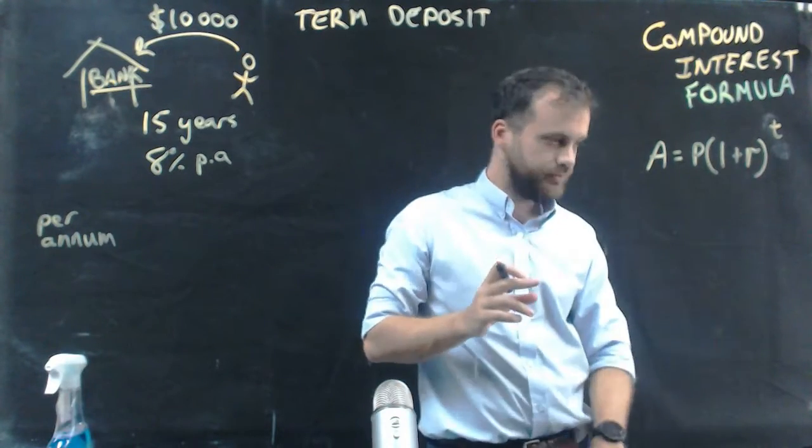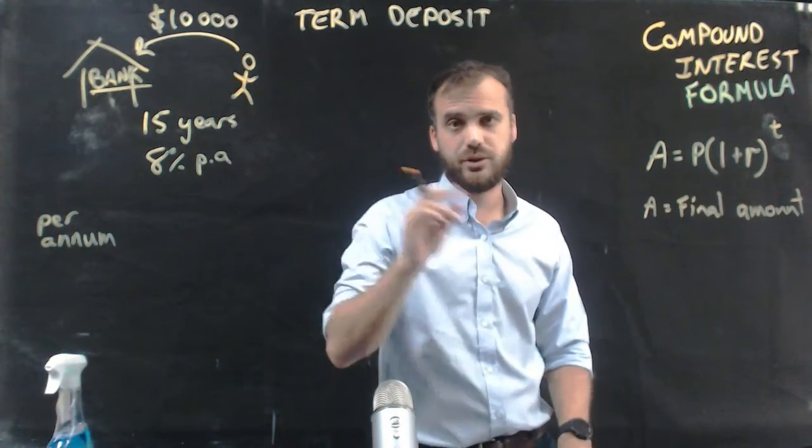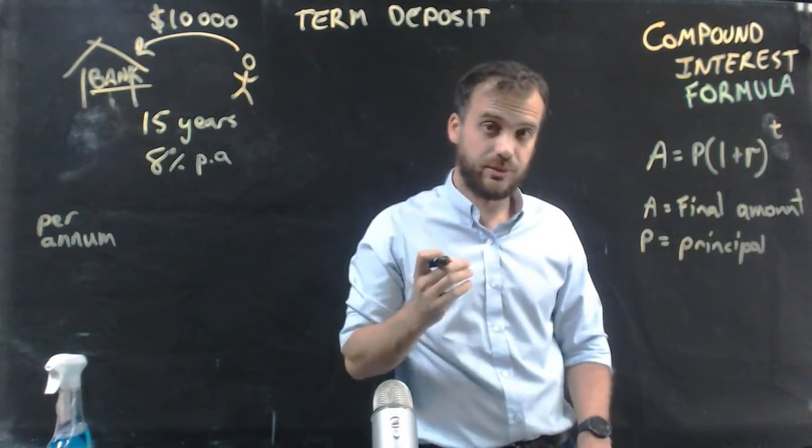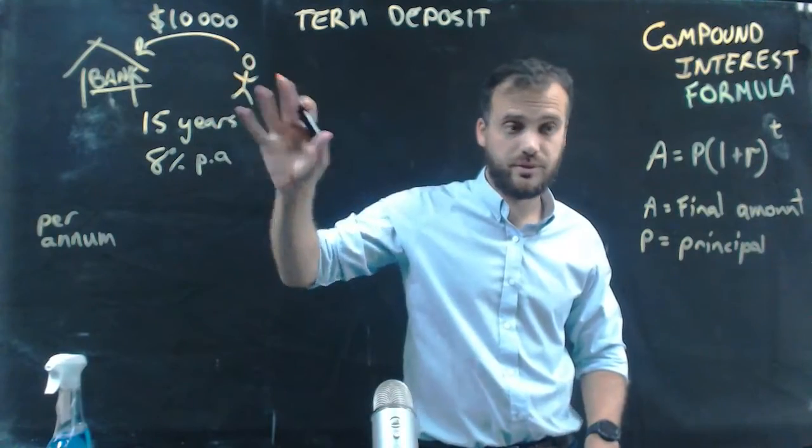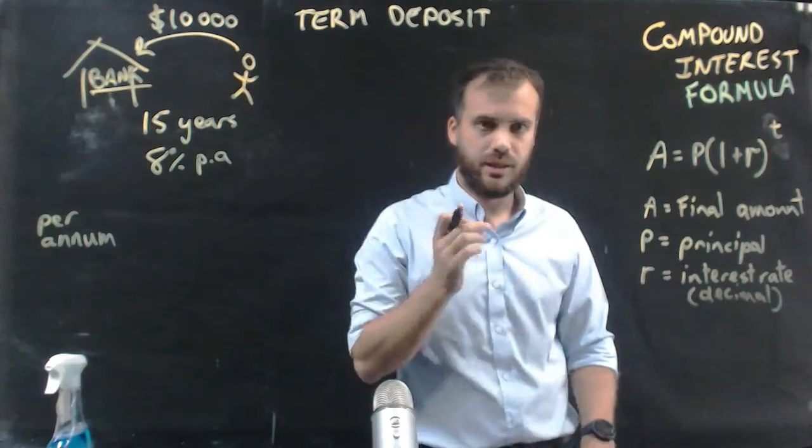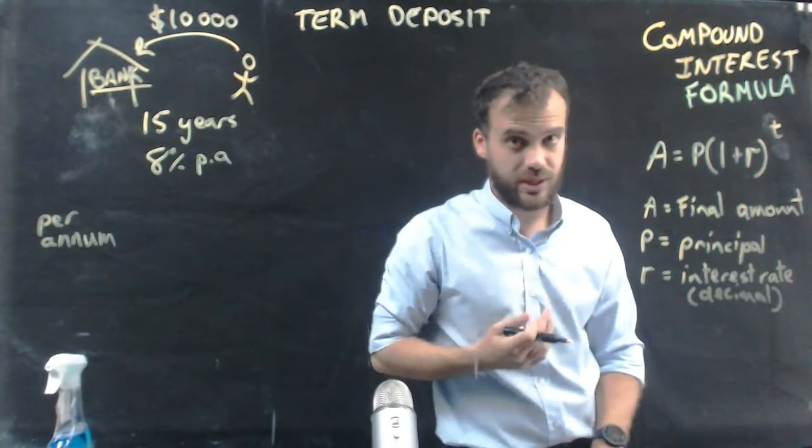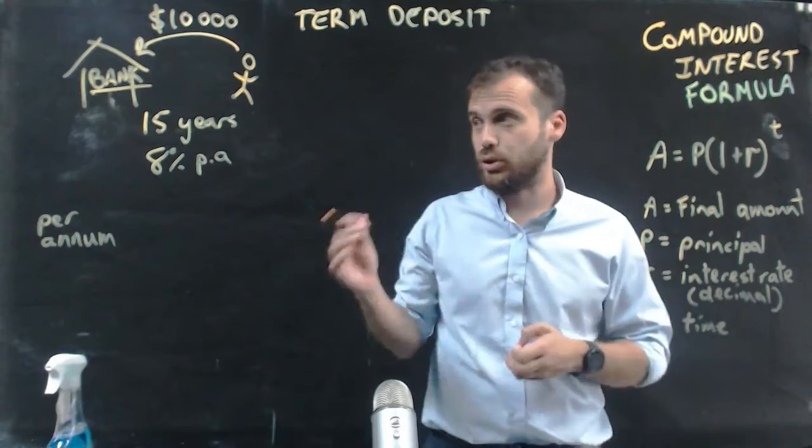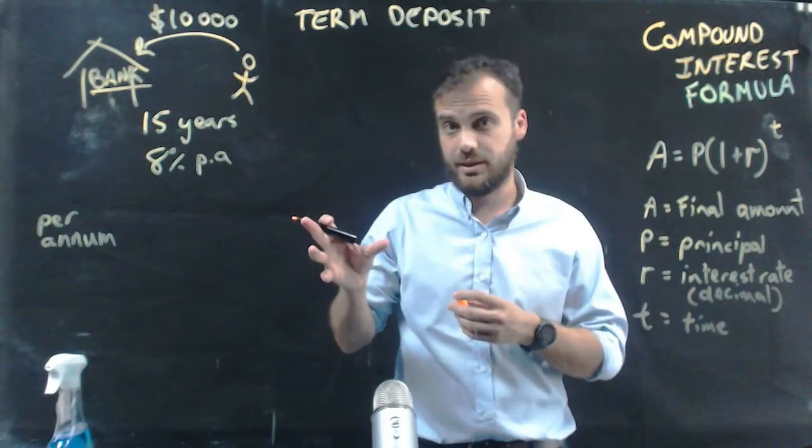So A is the final amount, the amount that you'll be able to pull out at the end of the term deposit. P is principal, the money that you started with. R is going to be the interest rate, but remember, it should be decimal, not percentage. And finally, T is time, how long it's going to be in our bank account.